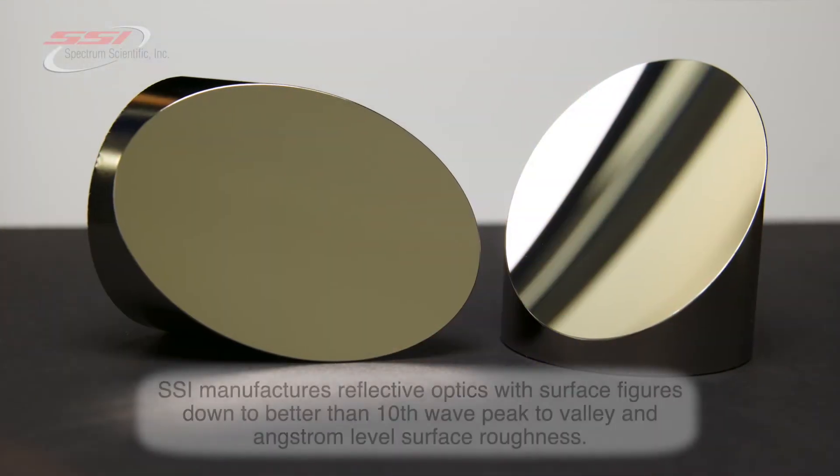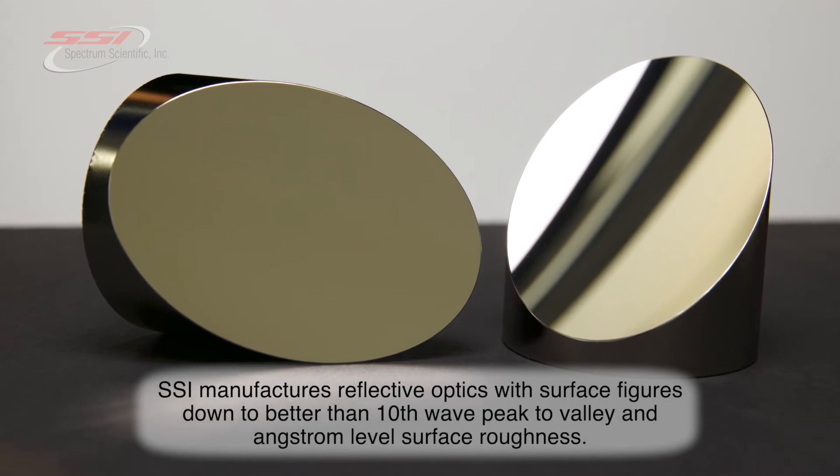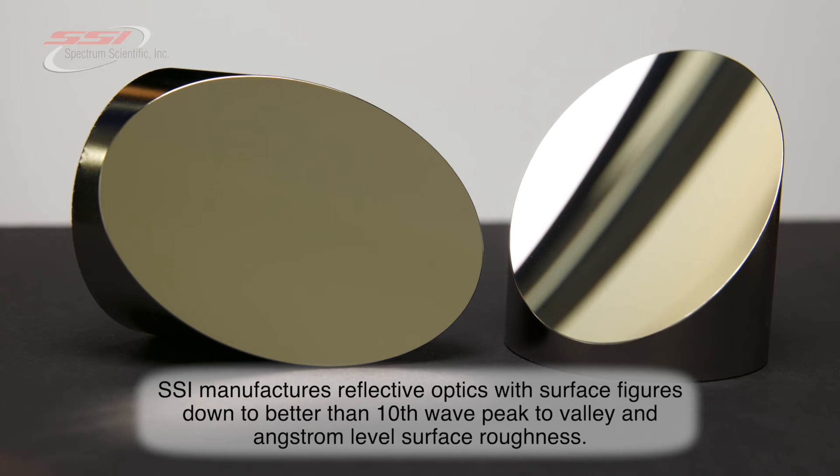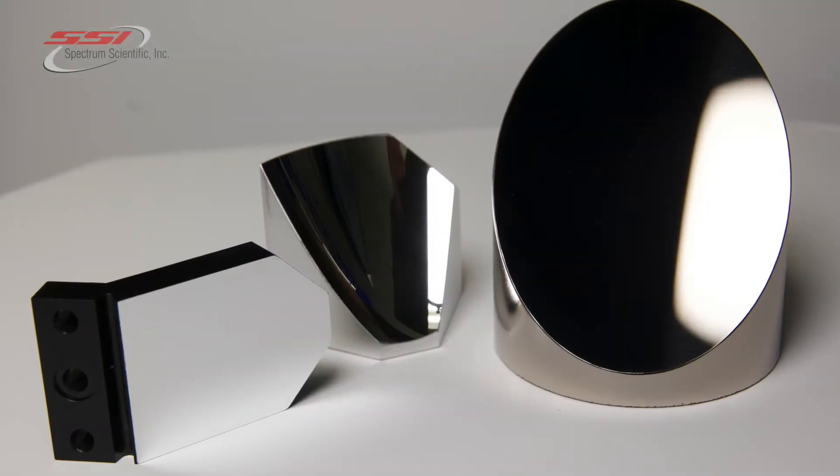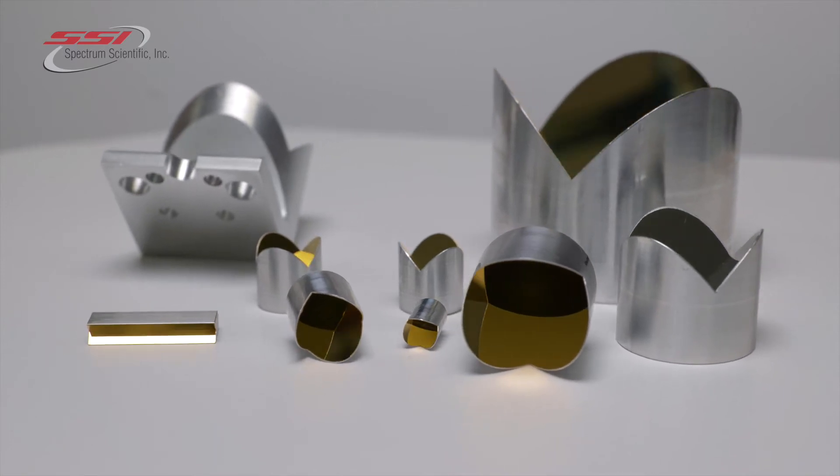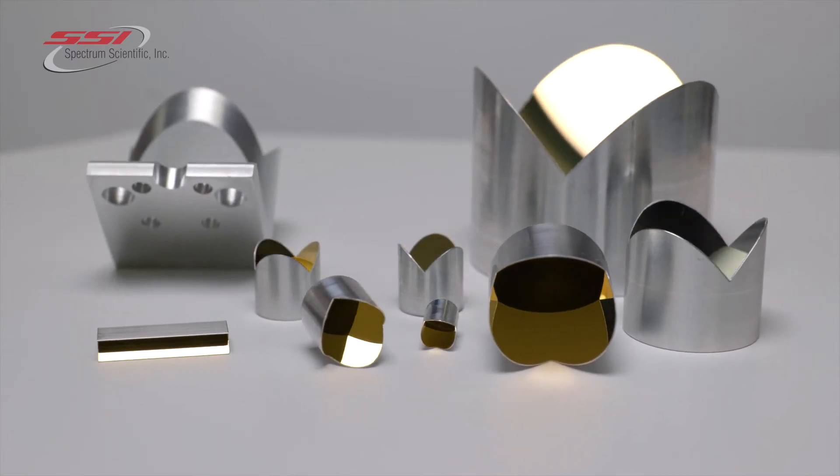SSI manufactures reflective optics with surface figures down to better than 10th wave peak to valley and angstrom level surface roughness. Our replication method is a surface profile transfer process that offers significant batch-to-batch repeatability, allowing for substantial production stability.